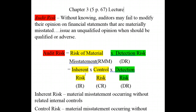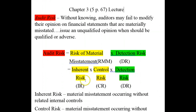Inherent risk is a material misstatement occurring without related internal controls. It is a risk that is naturally present with a particular account type. For instance, cash is a highly liquid asset. Because cash is so liquid, it has a high inherent risk. So if you don't have strong internal controls to protect your cash, then you could have a material misstatement in regards to that balance.